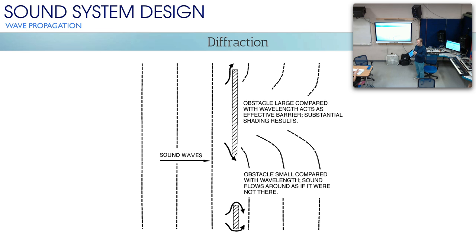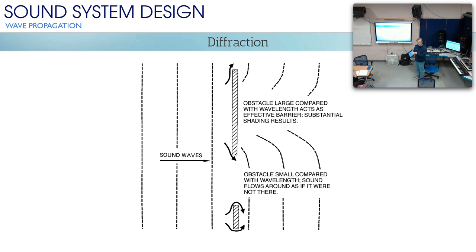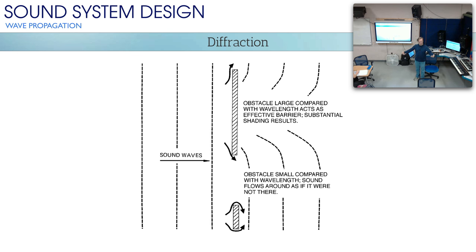Remember I told you the first day: you can't hide from sound, you can't dodge it. It's this wave that's pushing and pulling at you. You can, however, attempt to block it. If you're trying to block it, your ability to block it has to do with the relationship of the size of the thing and the size of the sound. If you try to put an obstacle in the way of a sound wave, that obstacle needs to be larger than the wavelength of the sound you are trying to stop.